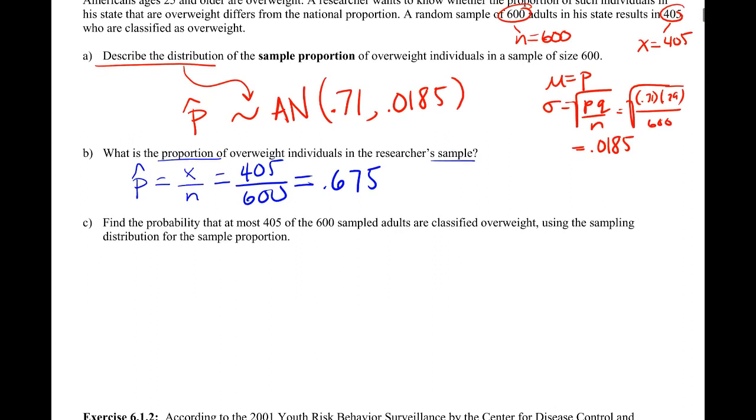Our last question here on this problem is to find the probability that at most 405 of the 600 sample adults are classified overweight using our distribution for the sample proportion. If we're going to use this distribution, we know that we have a normal distribution centered at 0.71, and if we're looking for a probability, we're looking for an area under the curve.